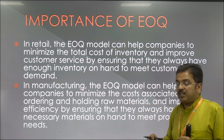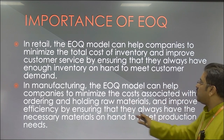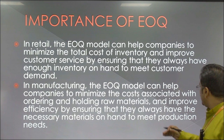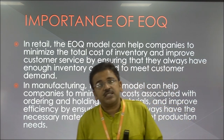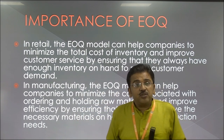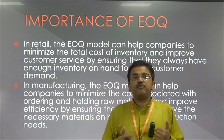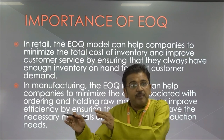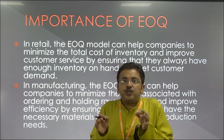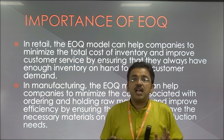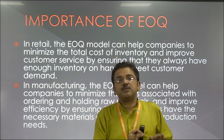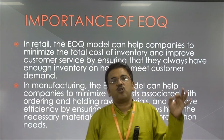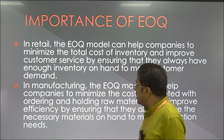The second application is in manufacturing. EOQ can help companies minimize the cost associated with ordering and holding raw materials, and improve efficiency by ensuring they always have the necessary materials on hand to meet production needs. In a manufacturing unit, raw materials are converted into finished goods. It is very important for the production manager to have a proper inventory mechanism — at what time raw material should be bought and how much — so that it reduces ordering cost as well as holding cost.